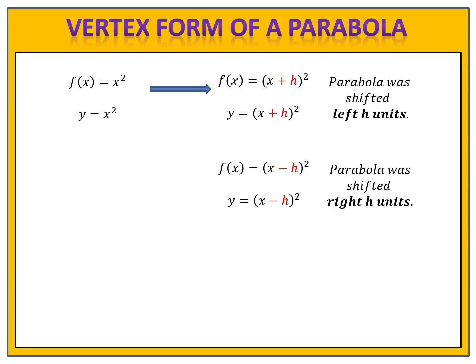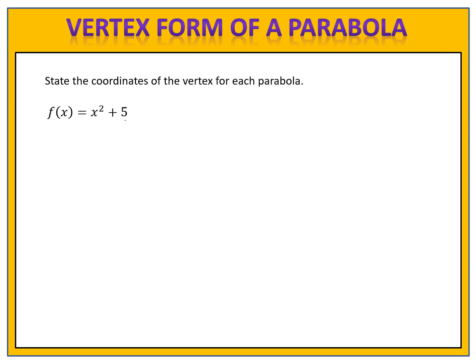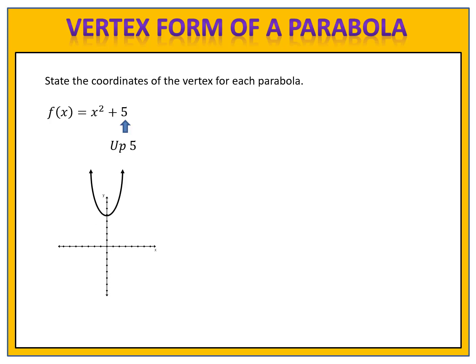Now let's combine this knowledge to identify the vertex of a parabola. Suppose we have the function f of x equals x squared plus 5. We're asked to state the coordinates of the vertex. We know that our parent function begins at the origin, (0, 0). We see that we have plus 5 on the outside of the parentheses, meaning our graph would move up 5 units. The coordinates of the turning point are (0, 5) — that's the location of the vertex.